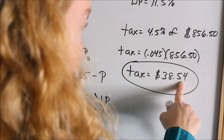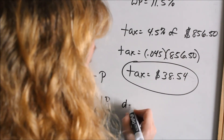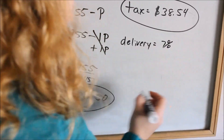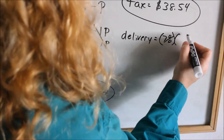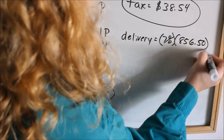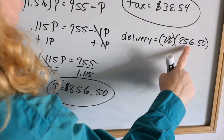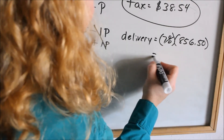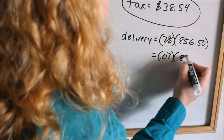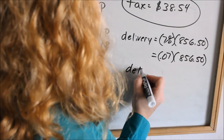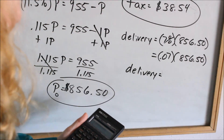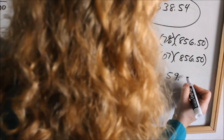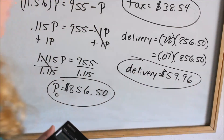Then they asked how much was the delivery fee. We were told the delivery fee was 7%, so delivery equals 7% of $856.50. Converting 7% to a decimal gives 0.07, and 0.07 times $856.50 gives us $59.96 — that's how much was spent on delivery for that piece of furniture.